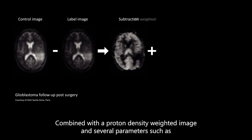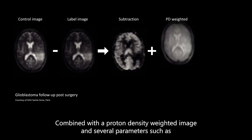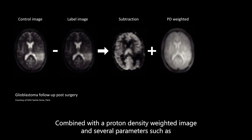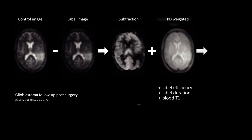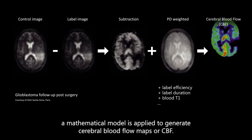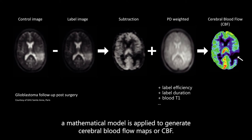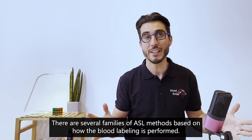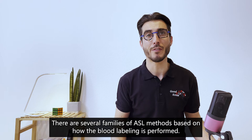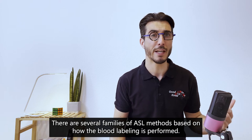Combined with a proton density weighted image and several parameters such as labeling efficiency, labeling duration, and blood T1, a mathematical model is applied to generate cerebral blood flow maps, or CBF. There are several families of ASL methods based on how the blood labeling is performed.